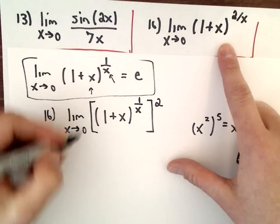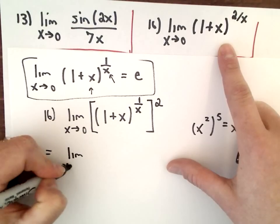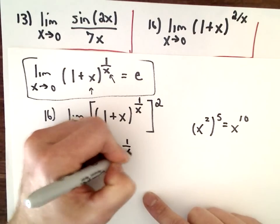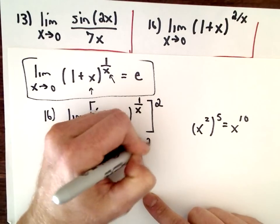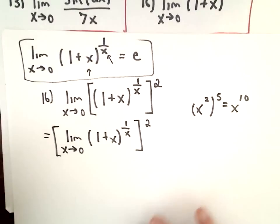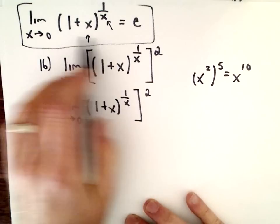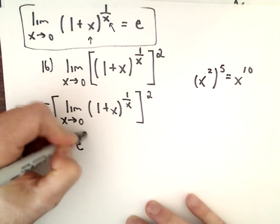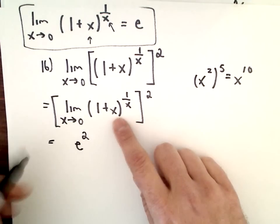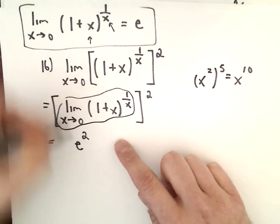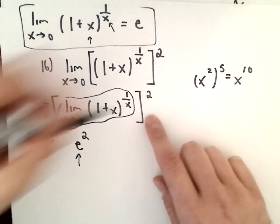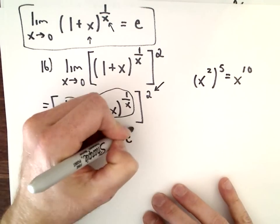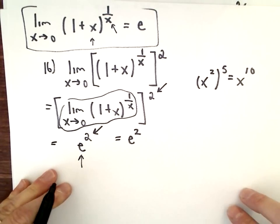So this is algebraically the same thing as what we started with in 16. There's a rule that says you can pull this limit inside. So it's the limit as x approaches 0 of [(1+x)^(1/x)]^2. That equals e, all being squared. The inside gives me e. Don't forget your power of 2, so that's e squared. Nothing more to it than that.